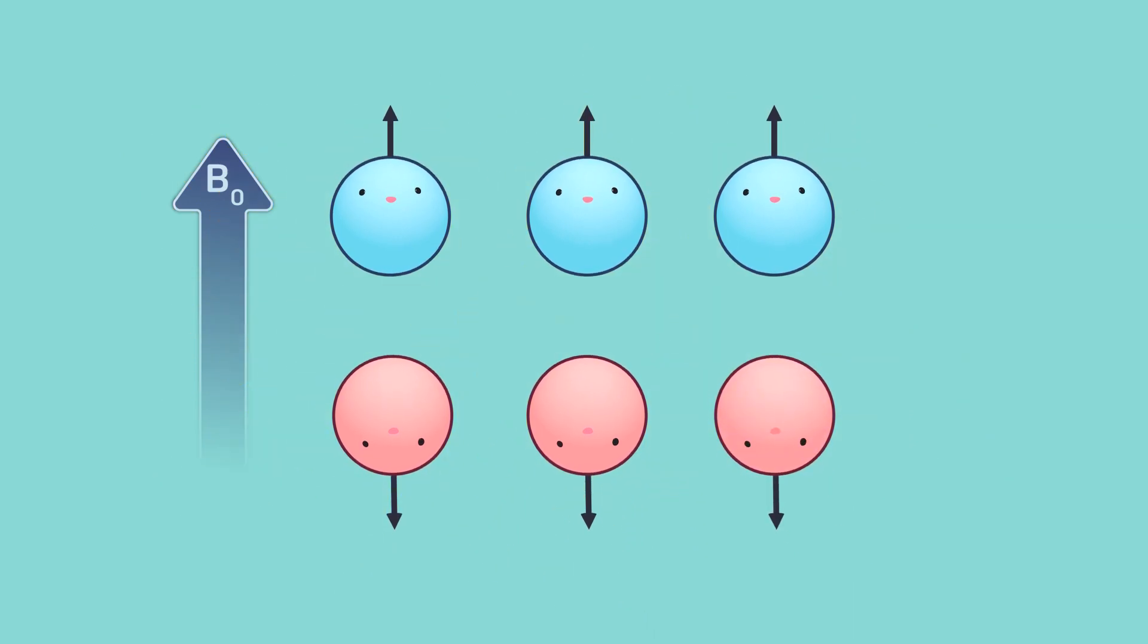protons have the ability to go against the current and instead orient themselves in the opposite direction, against that of the magnetic field. This is called anti-parallel.